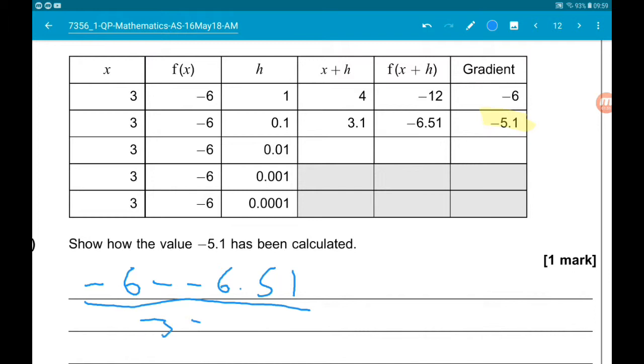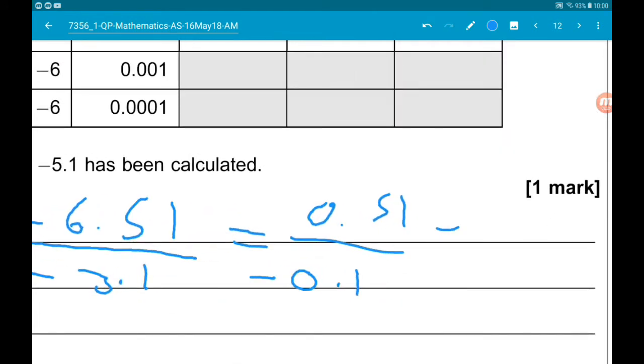That's going to give us 0.51. And on the bottom we've got -0.1, and that does indeed give us -5.1.